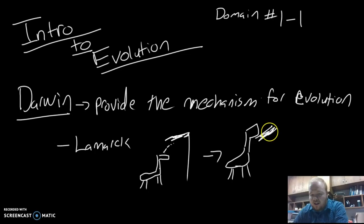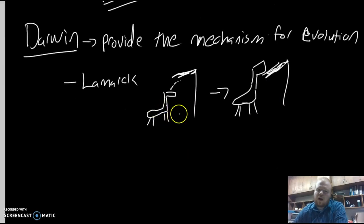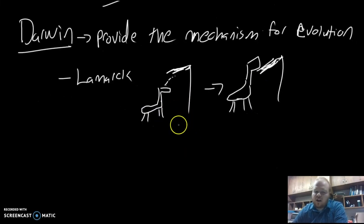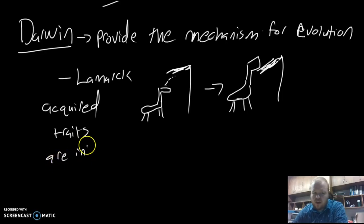The stretching and using of muscles is what's going to allow it to carry on these traits to offspring. His idea was that acquired traits are inherited. The problem with this idea was it was not as easy to provide evidence for, and Darwin challenged this.